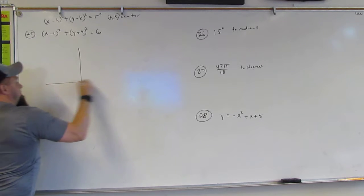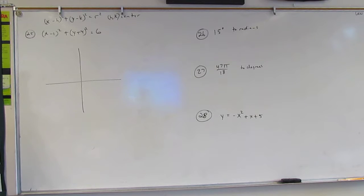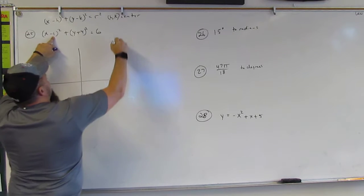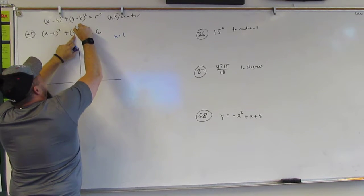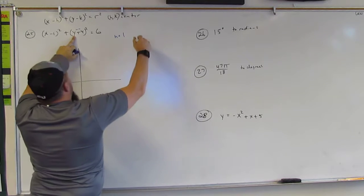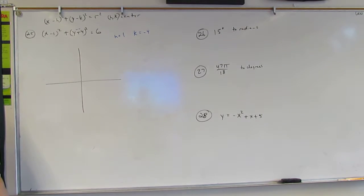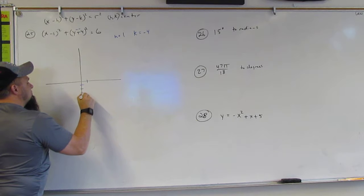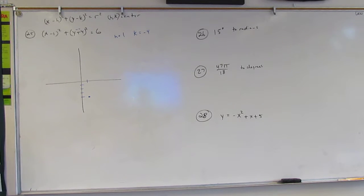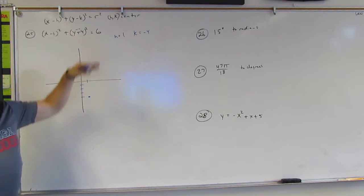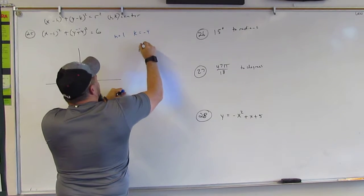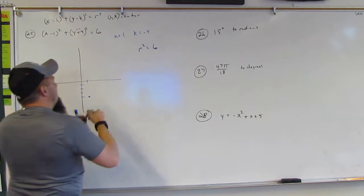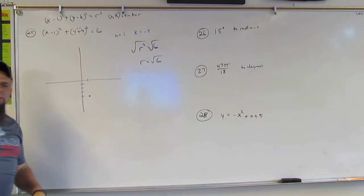This graph is based on Cartesian coordinates. We ask: what is H and what is K? Remember it's minus, so it's always the opposite sign. If it's minus one, then H equals one. If it's plus four, it's really minus a negative four, so K equals negative four. The radius: R squared equals six, so it's not six itself.